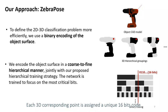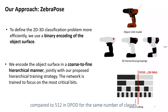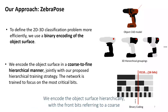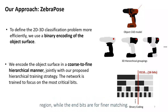Each 3D corresponding point is assigned a unique 16-bit code. To classify vertices, we need only 16 output layers, compared to 512 in DPOD for the same number of classes. We encode the object surface hierarchically, with the front bits referring to a coarse region, while the end bits are for final matching.